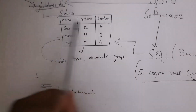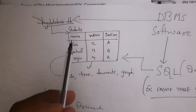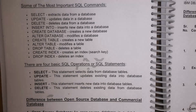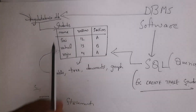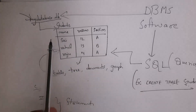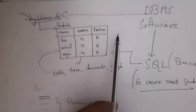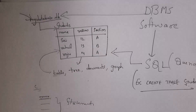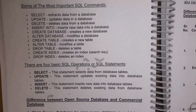INSERT statement inserts new data into database tables — for example, adding name 'Nagendra', roll number 59, section C into a table. DELETE statement deletes existing data from database tables — for example, deleting an entire row like 'Sai, roll number 2, section A'. These are the four basic SQL operations.